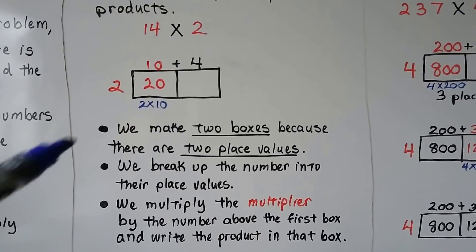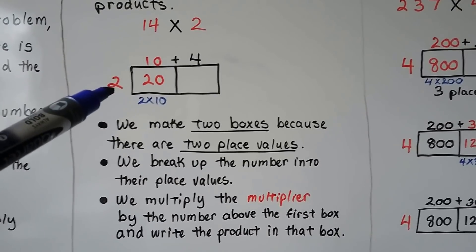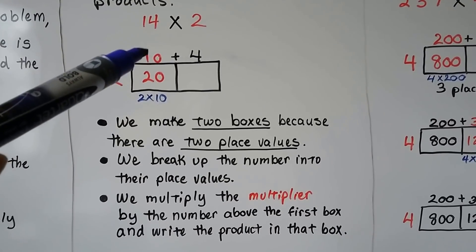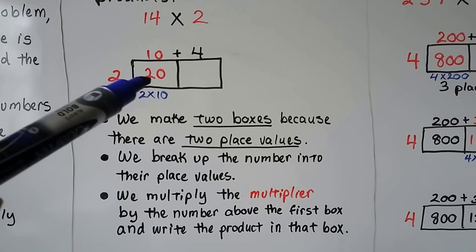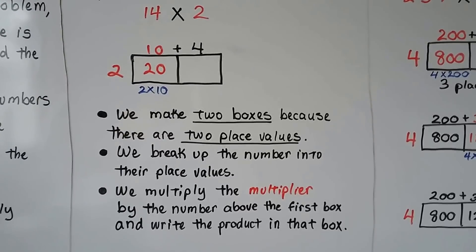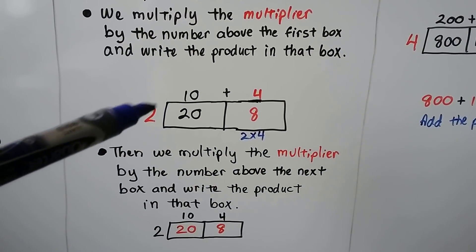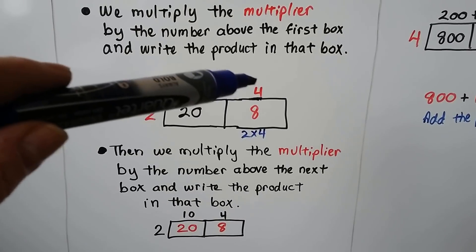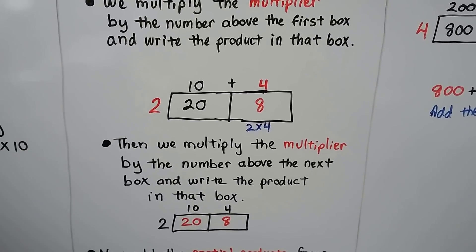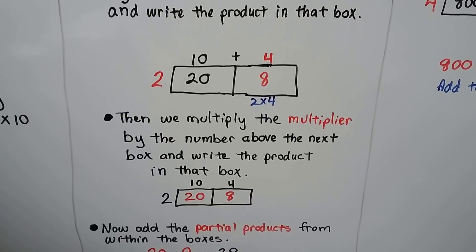We multiply the multiplier, the 2, by the number above the first box, and we write the product in the box. 2 times 10 is 20. Then we multiply the multiplier by the number above the next box and write the product in that box. 2 times 4 is 8.